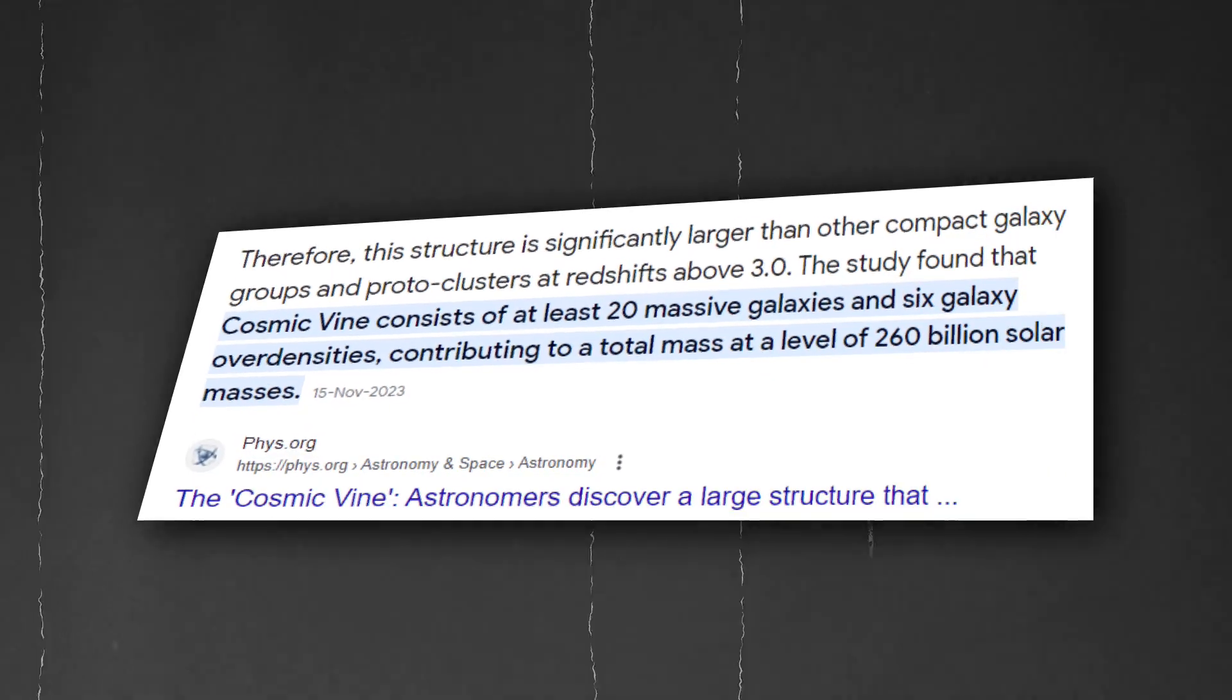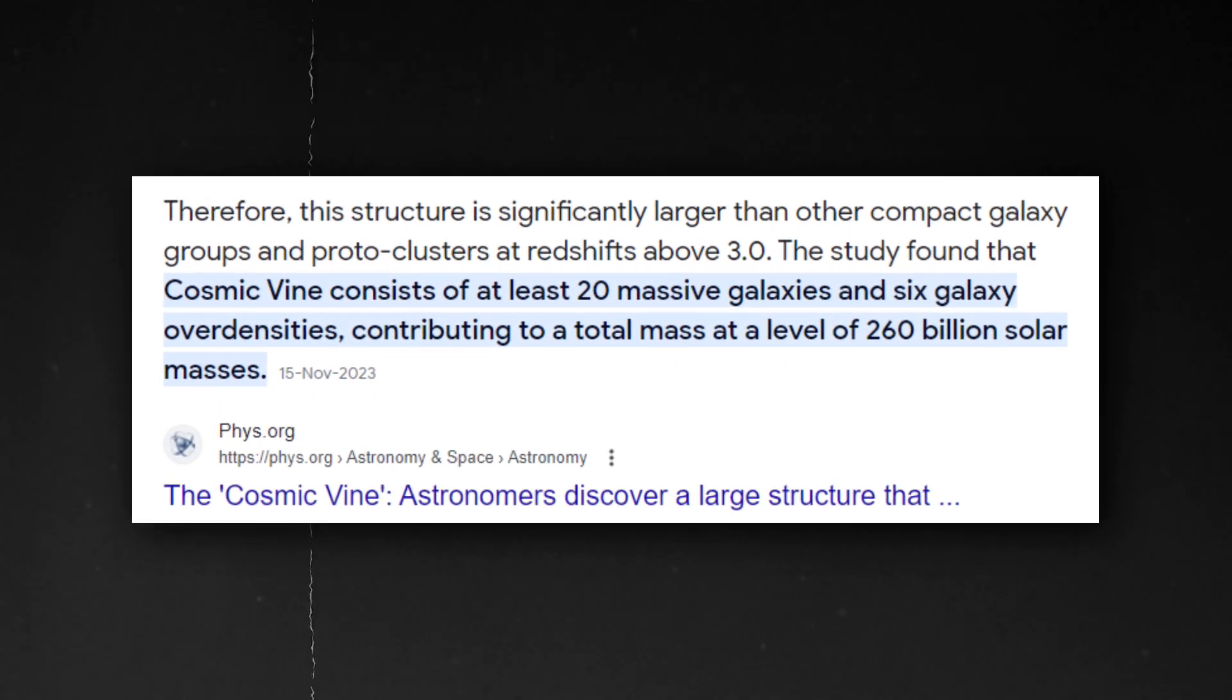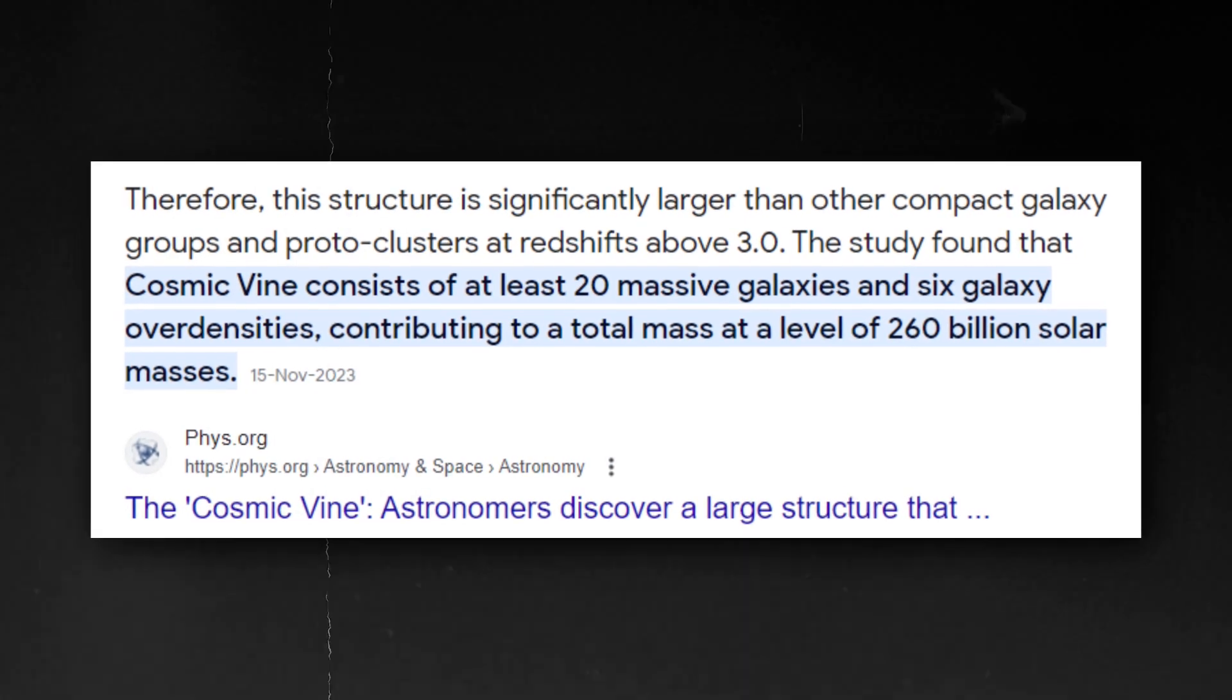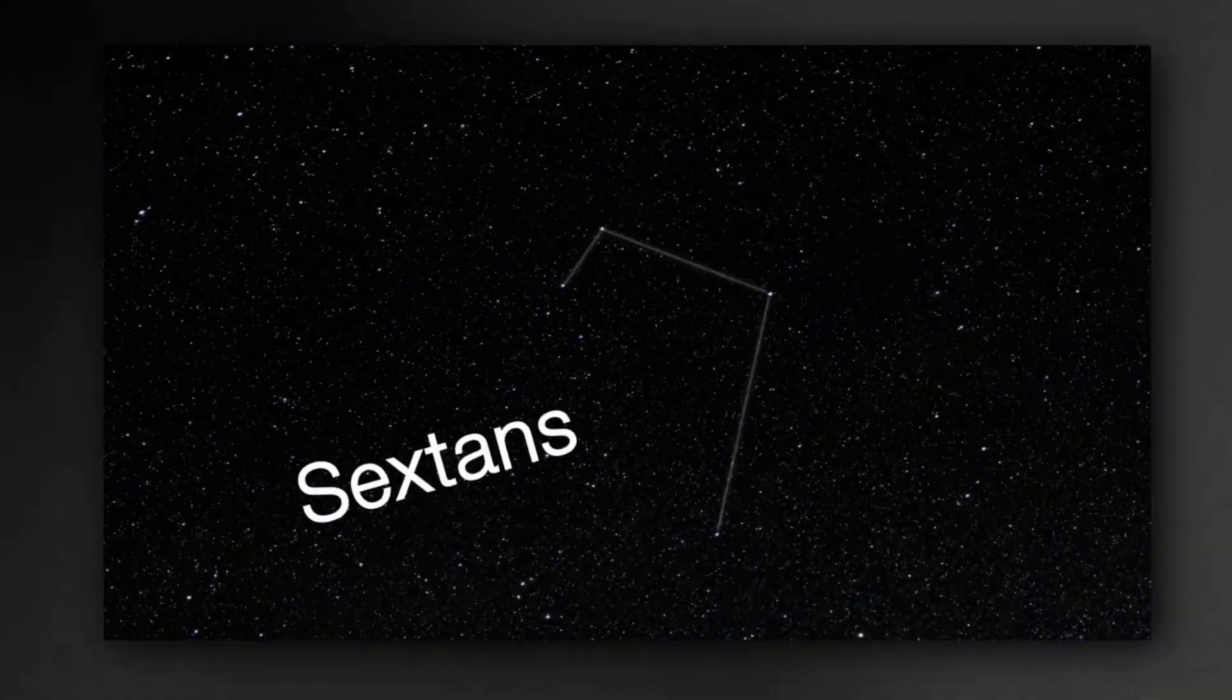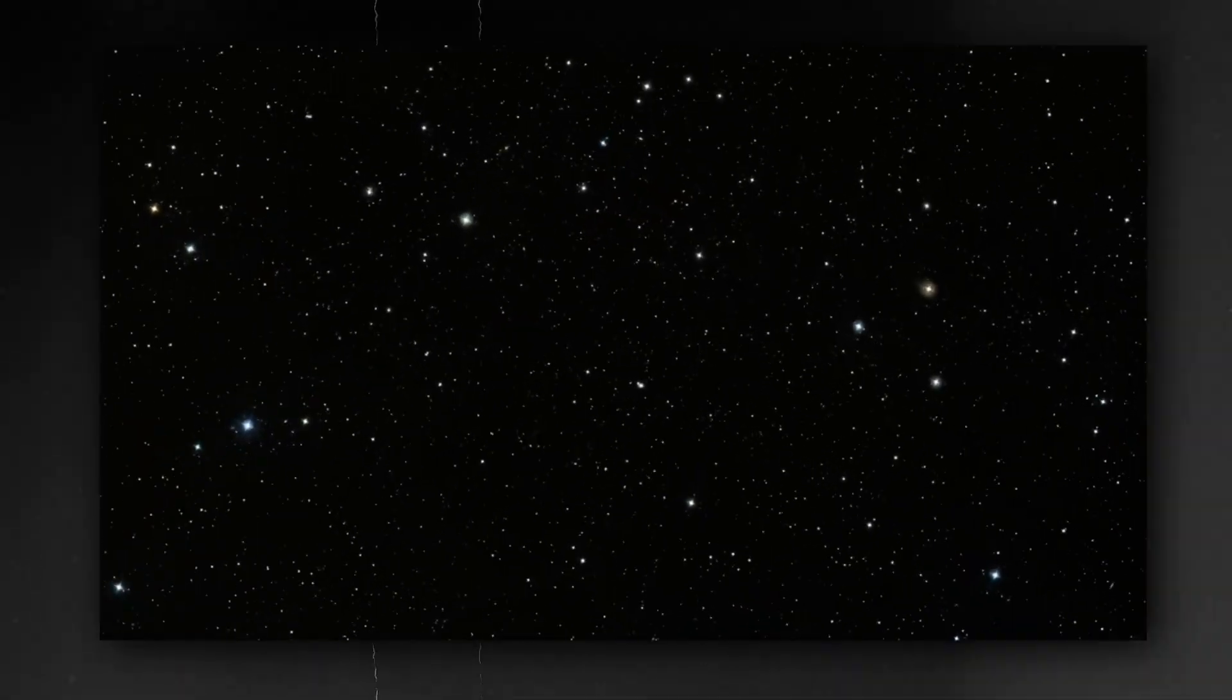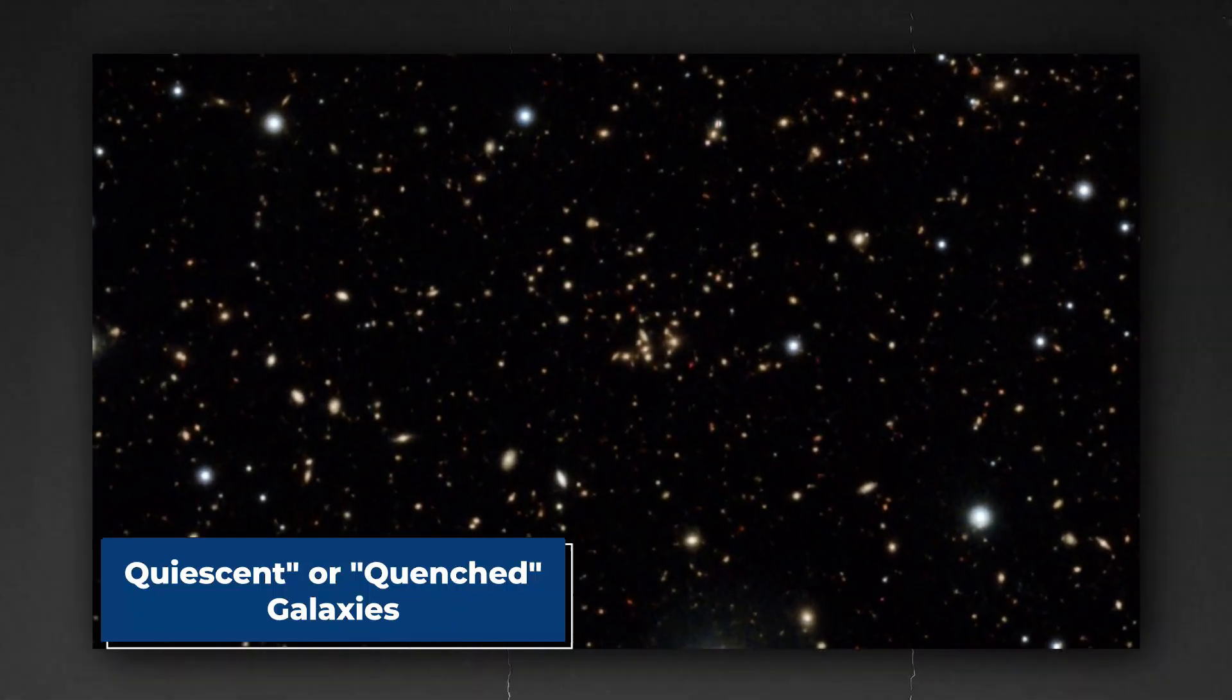From the very latest research, it's estimated that Cosmic Vine has a mass of about 260 billion solar masses and is still growing, and it's still said that two of its most giant galaxies are now even ready to quit. While studying the redshift's wavelength, it was found that the star formation within the two specific galaxies of Cosmic Vine was stopped, designating them as quiescent or quenched galaxies.